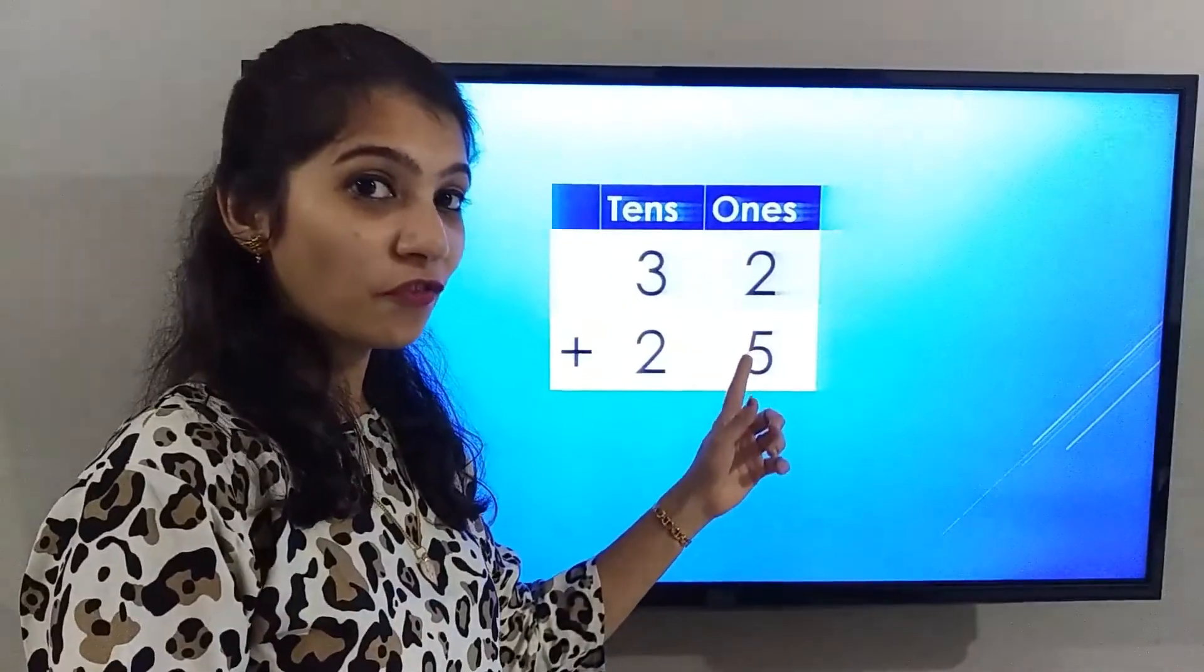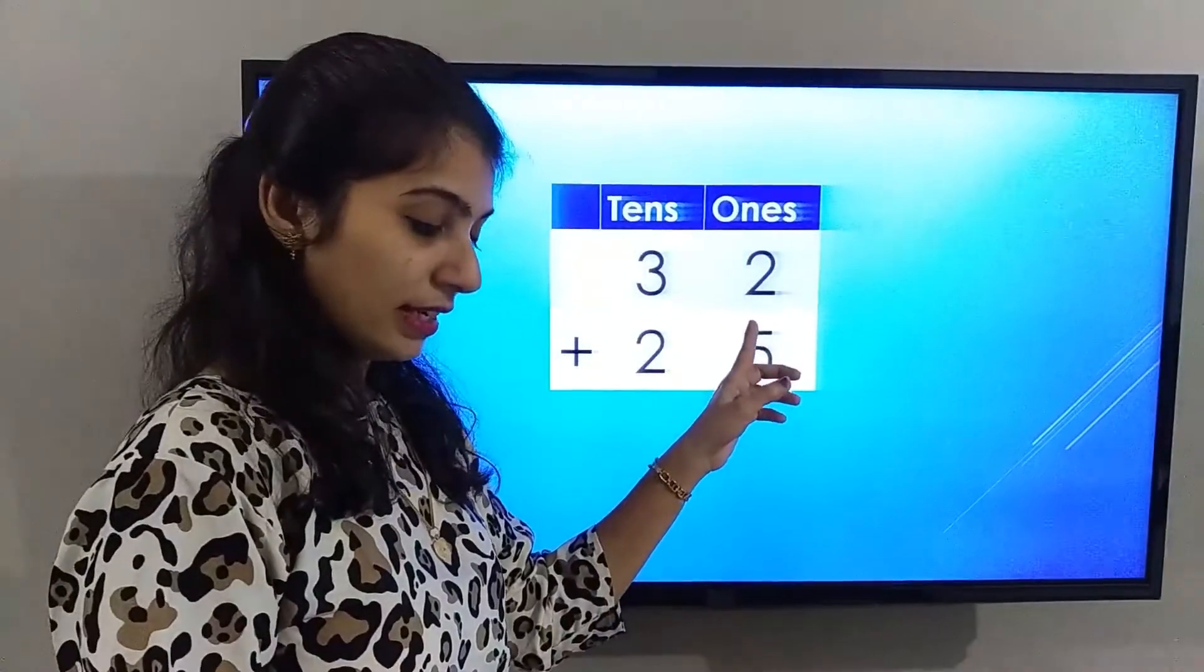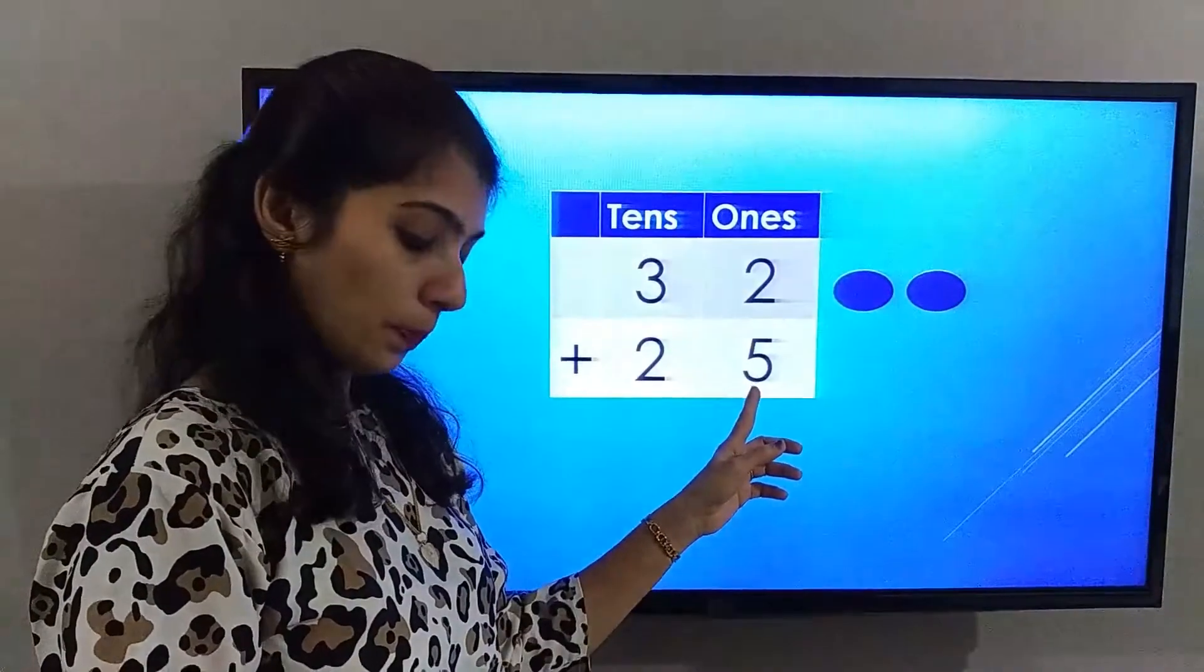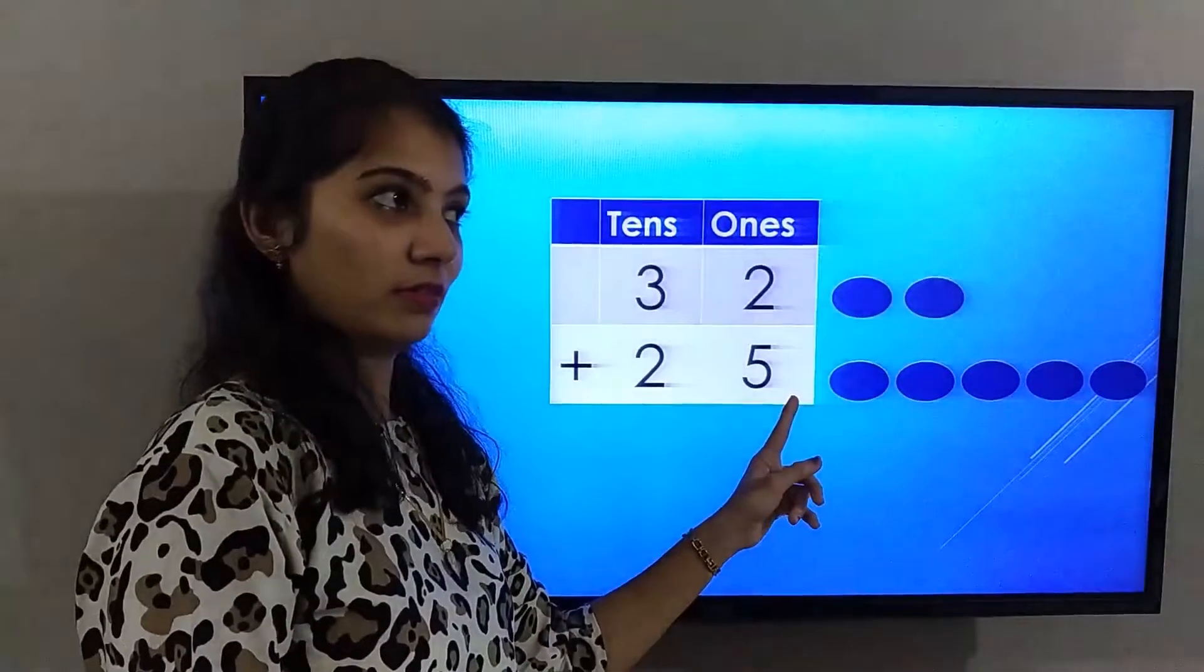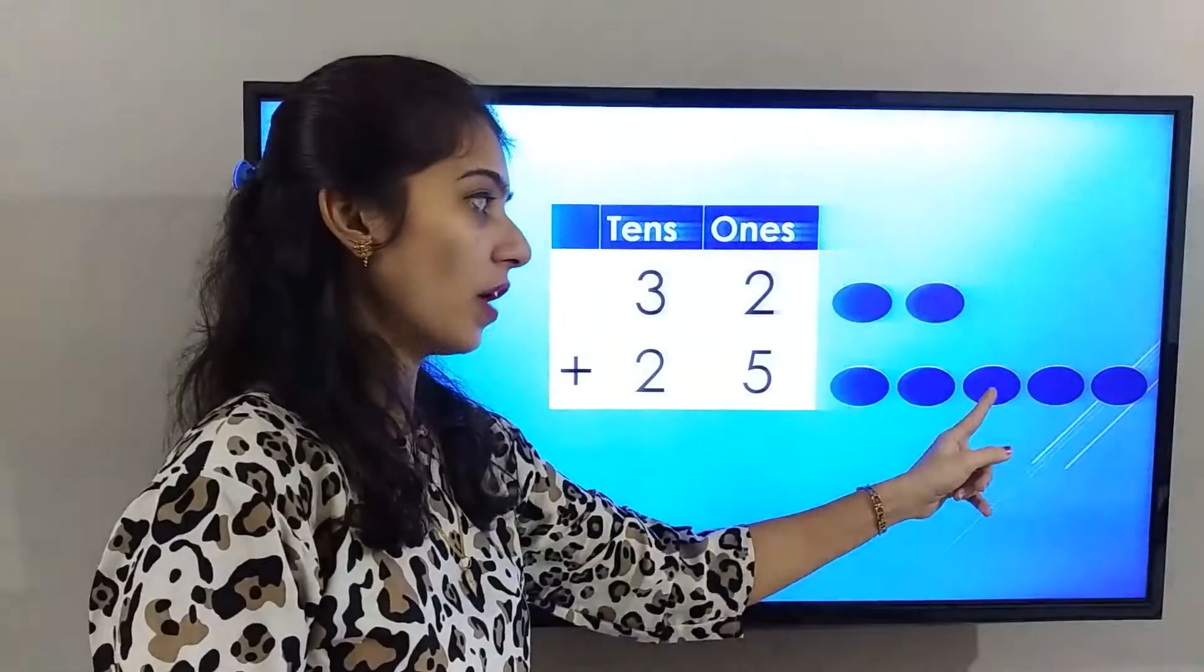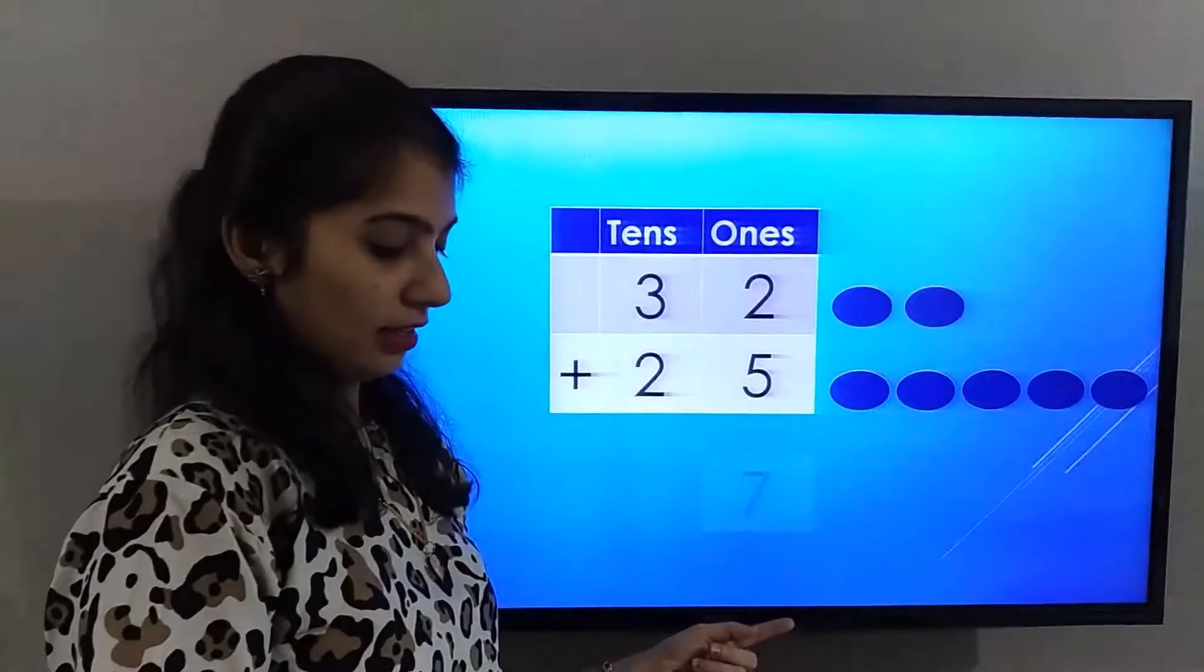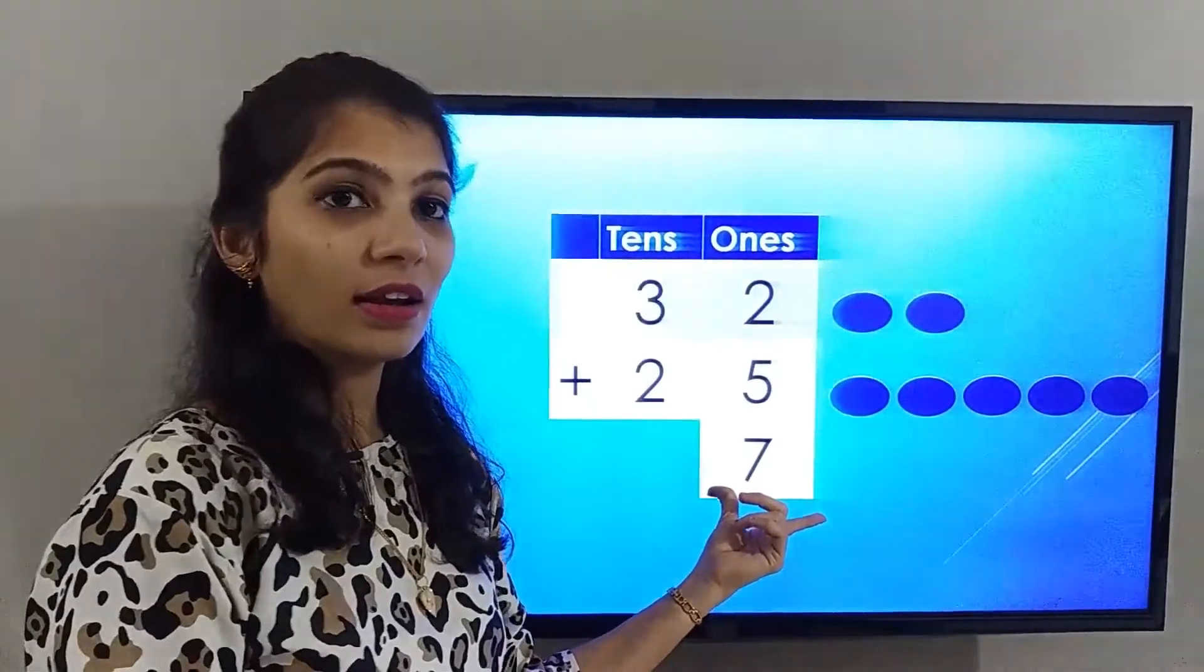solve the ones place first, which is on the right hand side. The number is 2 plus 5. Let's count all the balls together. 1, 2, 3, 4, 5, 6, 7. The answer in the ones place is 7.